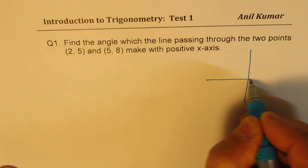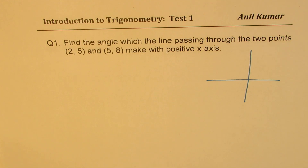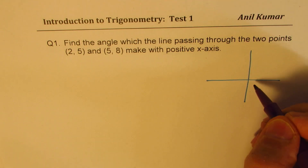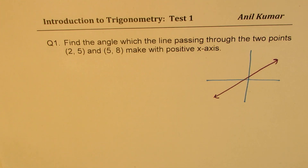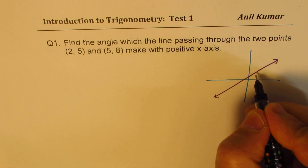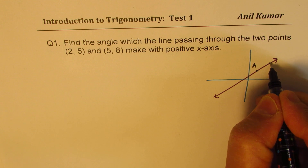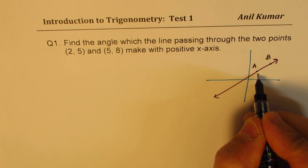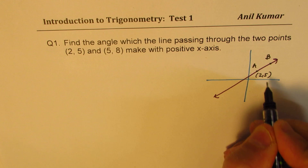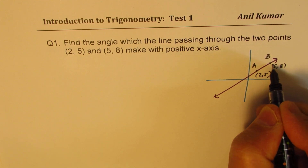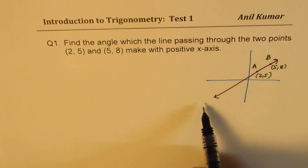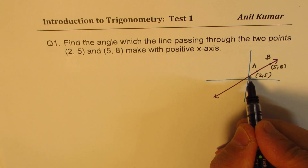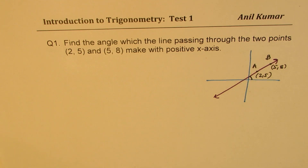Let's try to understand the equation. Let us say we have the coordinate plane with the two points (2, 5) and (5, 8). This is the line which is going through these two points. Let's call these points A and B — A is (2, 5) and B is (5, 8). We need to find the angle which the line passing through these two points makes with the x-axis.